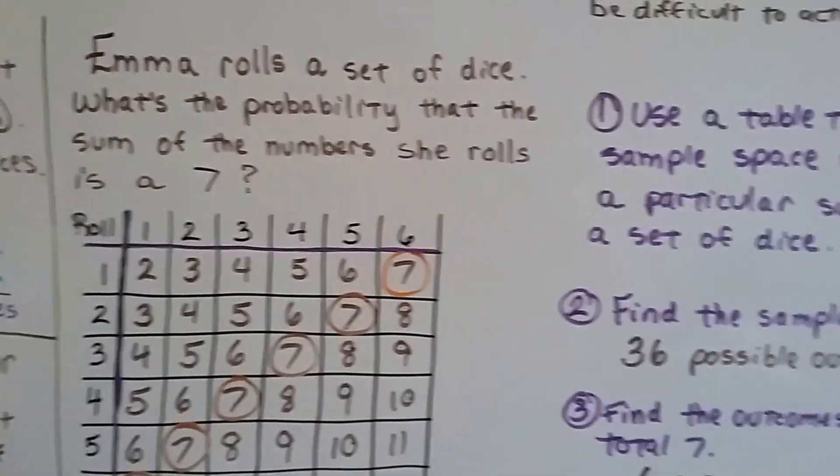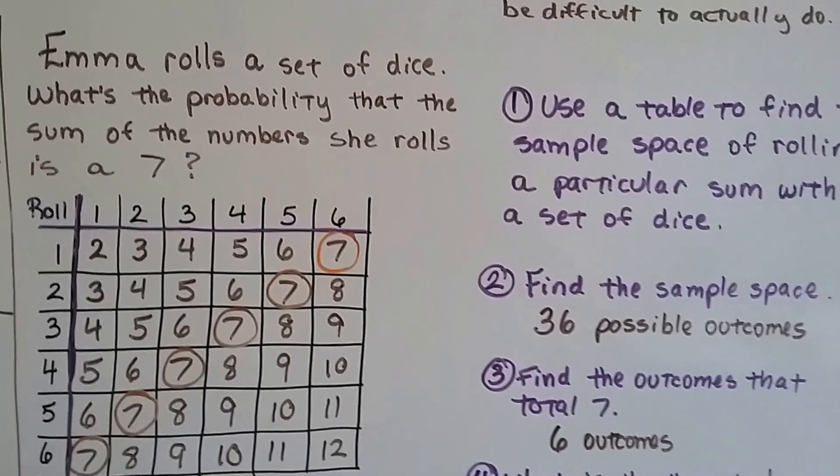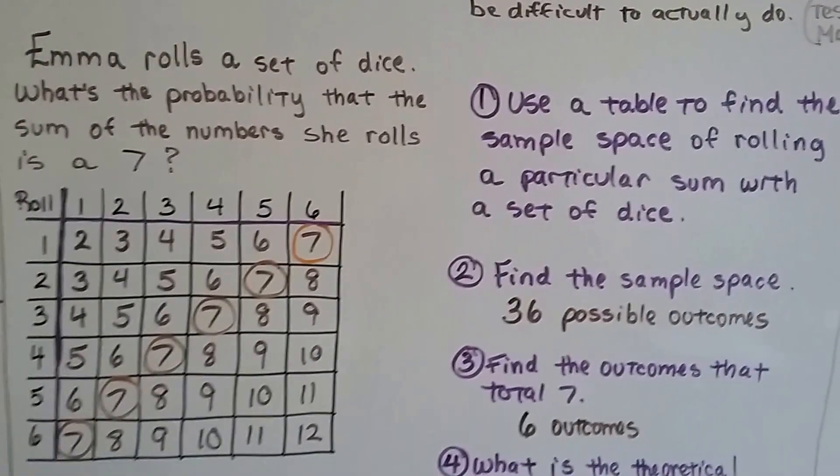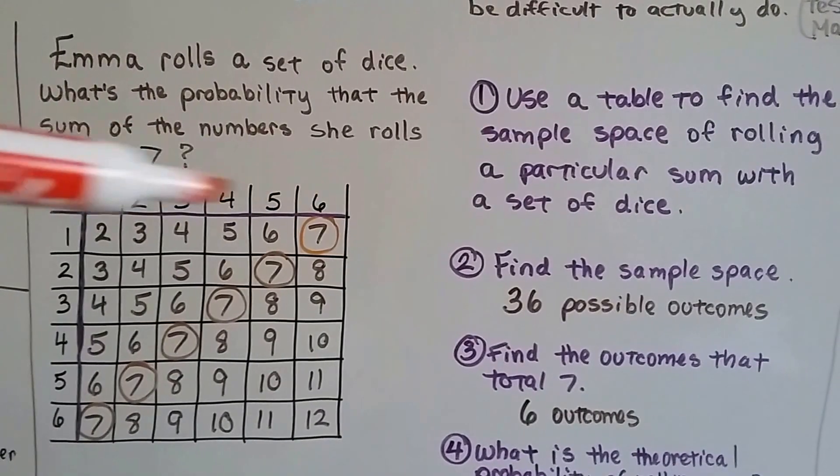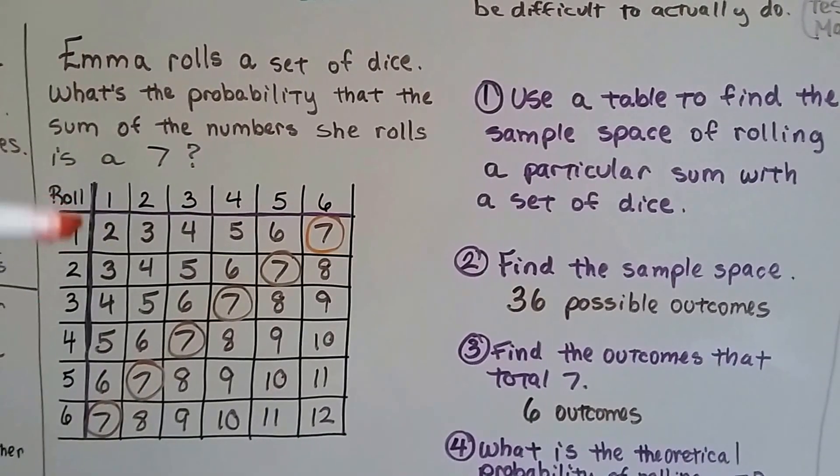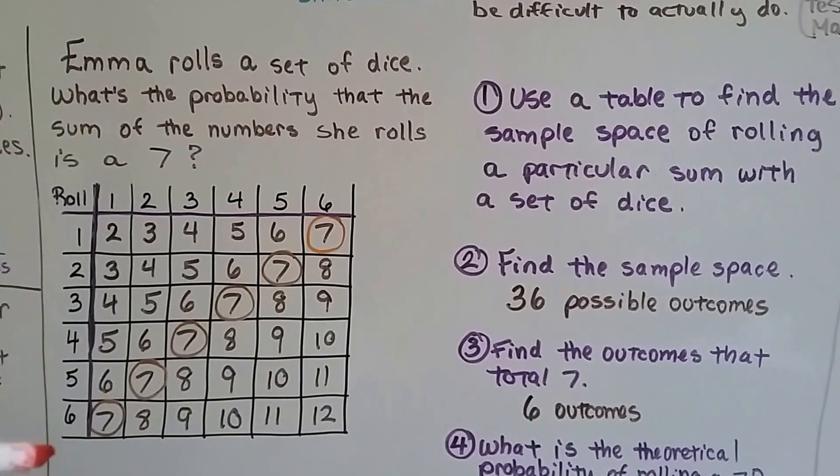So Emma rolls a set of dice. What's the probability that the sum of the numbers she rolls is a 7? One die has 1, 2, 3, 4, 5, 6 on it, and the second one has 1, 2, 3, 4, 5, 6 on it.